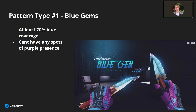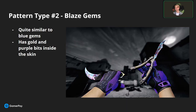With Case Hardens, you have different types of patterns. First of all, you have blue gems. For a knife to be an actual blue gem, it has to have at least 70% blue coverage — and by blue, I also mean sky blue. So if there are any spots of purple present, in most cases they aren't considered blue gems unless the percentage is really high. Next to that, you also have blaze gems, and here I have an example. These are quite similar to blue gems.